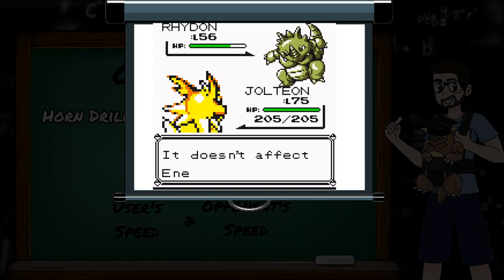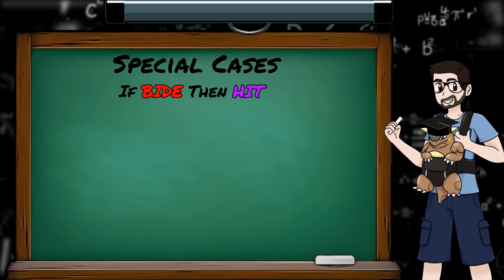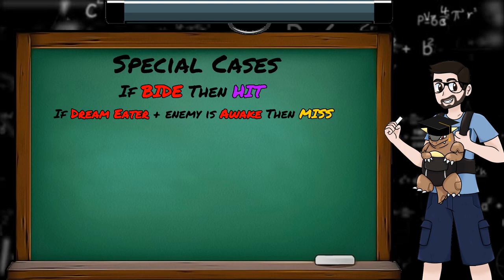And finally we have some special cases that decide if certain moves hit or miss, bypassing the accuracy calculation. Bide skips the accuracy checks entirely when unleashing its stored up energy. If the move is Dream Eater, the game checks if the enemy is asleep, because if the enemy is awake, regardless of evasion or accuracy, the move can't connect. Next was the move Swift, because if so, ignore every other check that follows. So Swift can't miss, it's immune to the 1 in 256 glitch, and can even hit Pokemon whilst in the air during fly, or in the ground during dig.